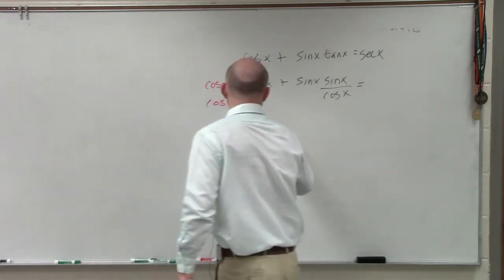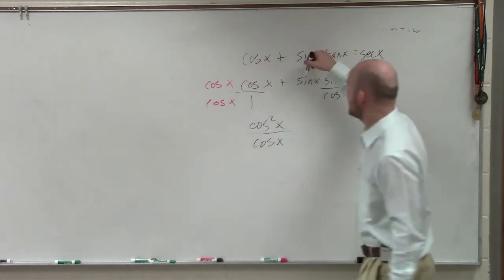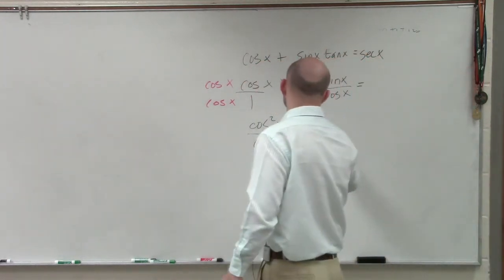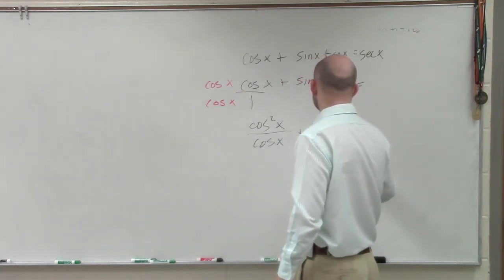Therefore, I obtain cosine squared of x over cosine of x. Now here, I have sine of x times sine of x, which is going to be sine squared of x over cosine of x.